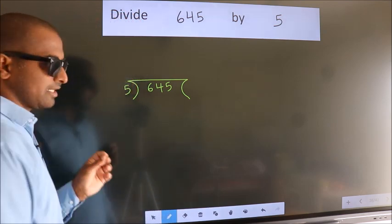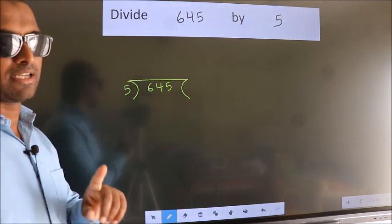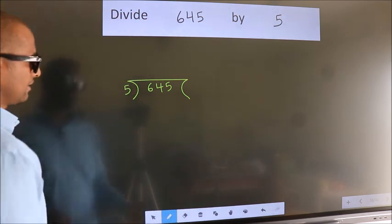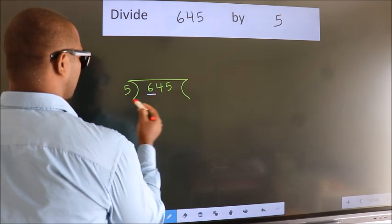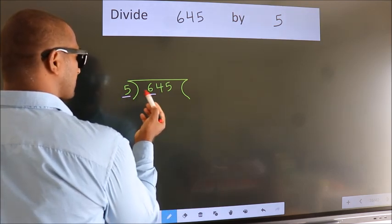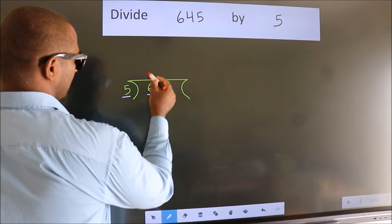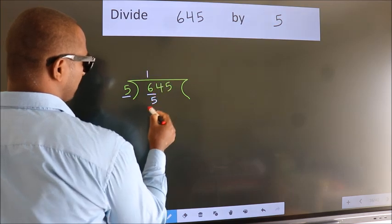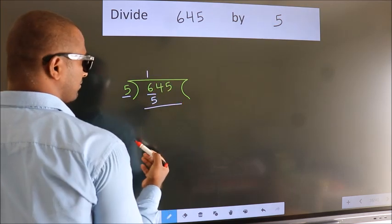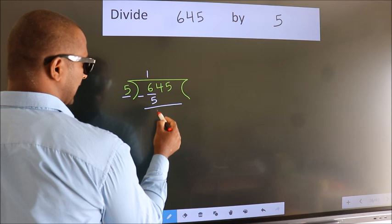This is your step 1. Next, here we have 6, here 5. A number close to 6 in 5 table is 5 once 5. Now, we should subtract. We get 1.